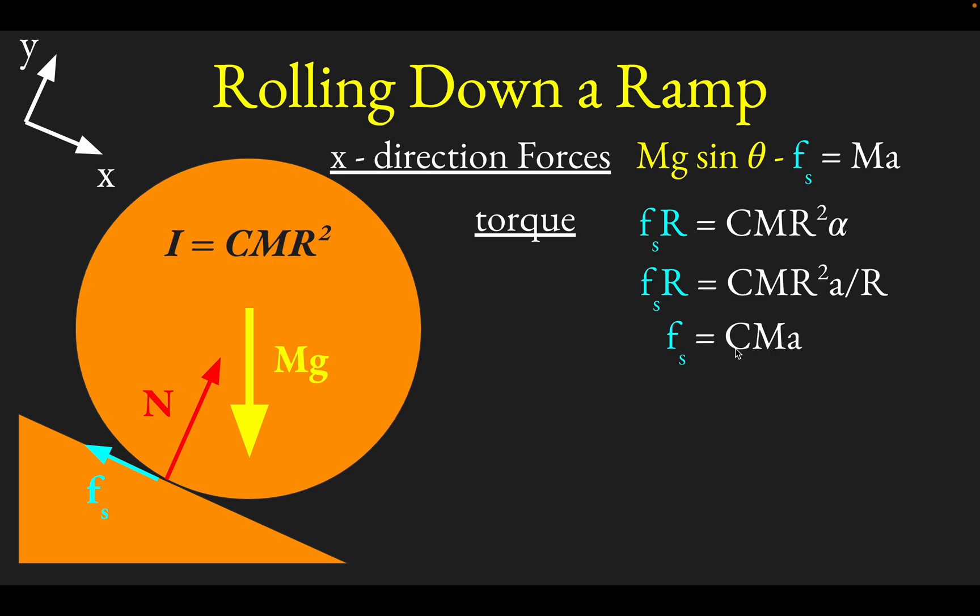So if we substitute this value of fs in for the expression above that we got from the x-direction forces, we get this: Mg sine theta minus our friction force. So Mg sine theta was the force down the ramp minus our friction force equals MA.